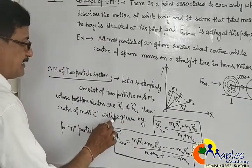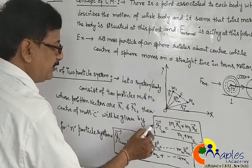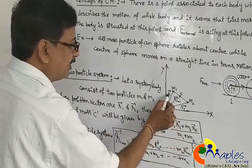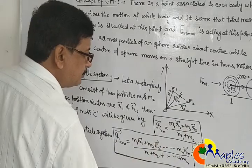Then the position of center of mass of the two particle system will be given by R_CM equals (M1 R1 plus M2 R2) upon (M1 plus M2).